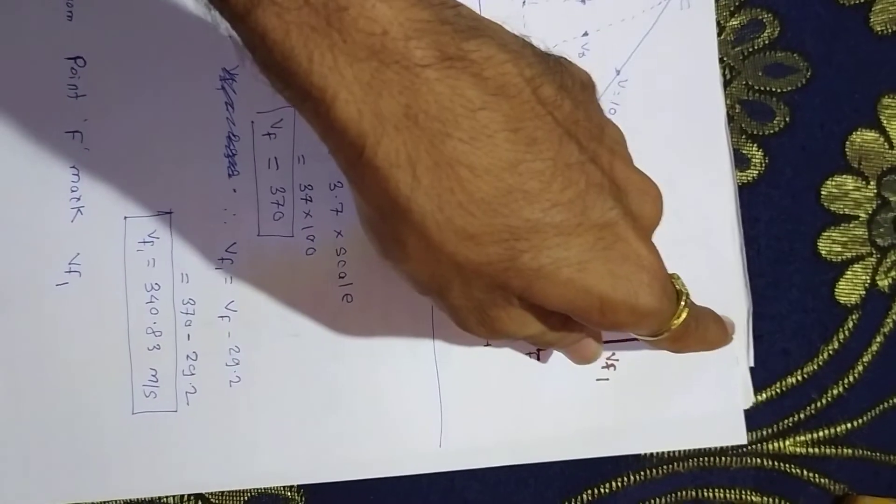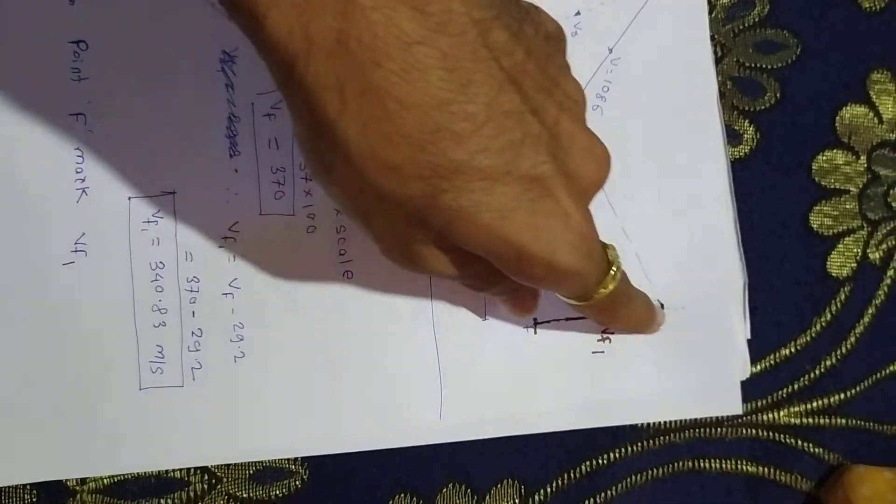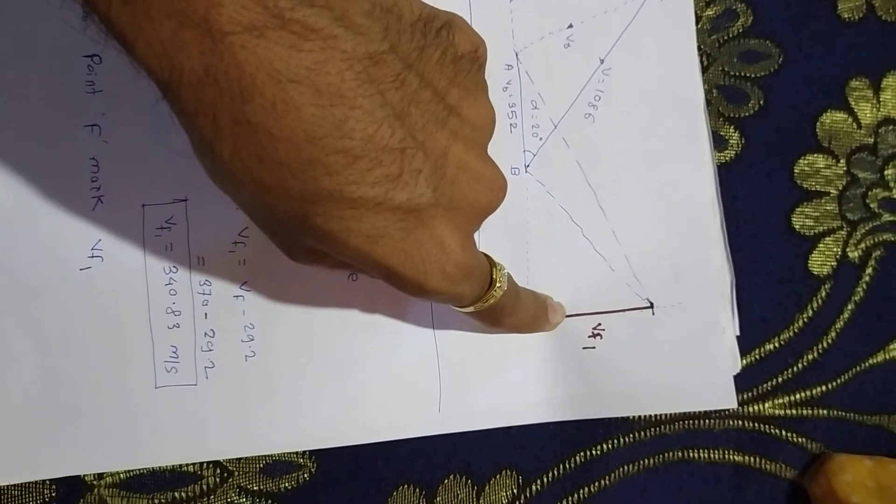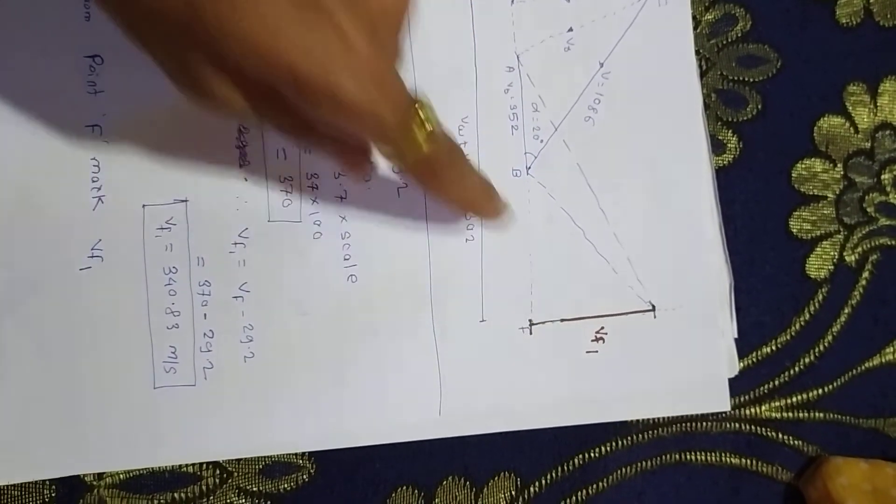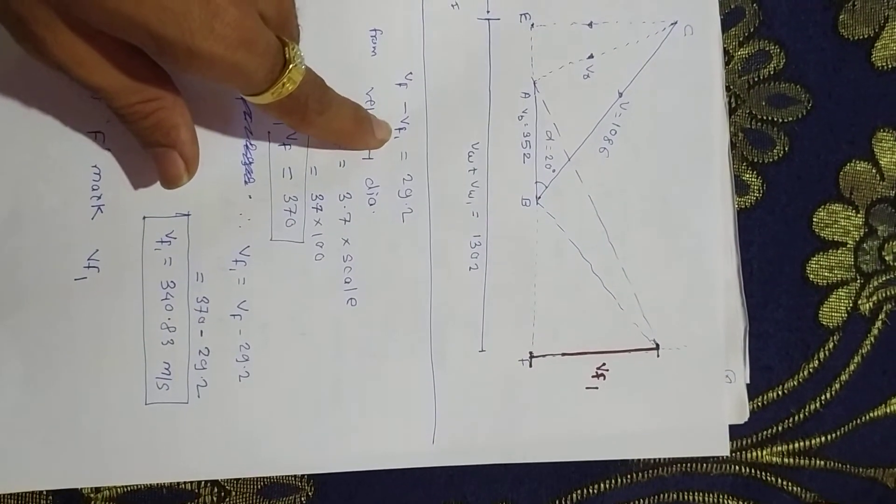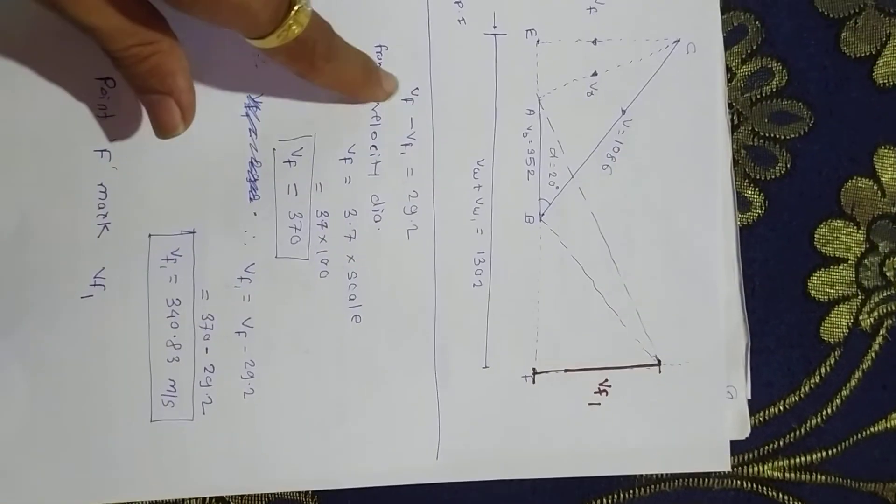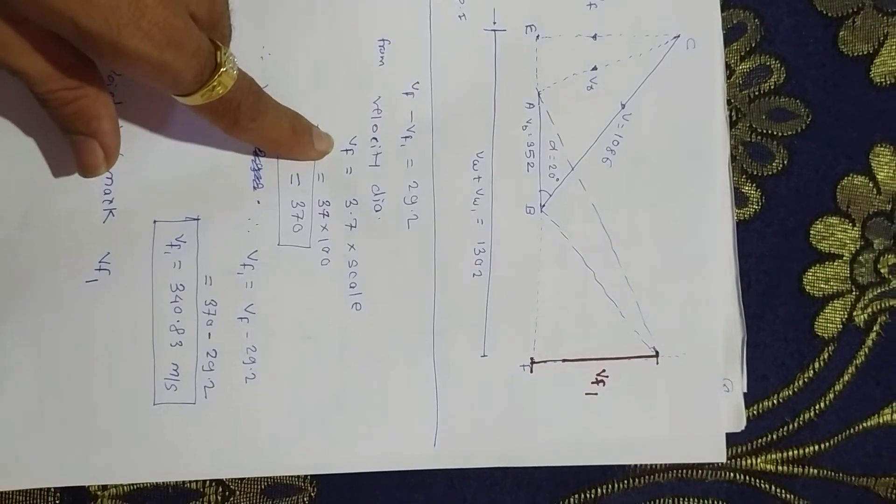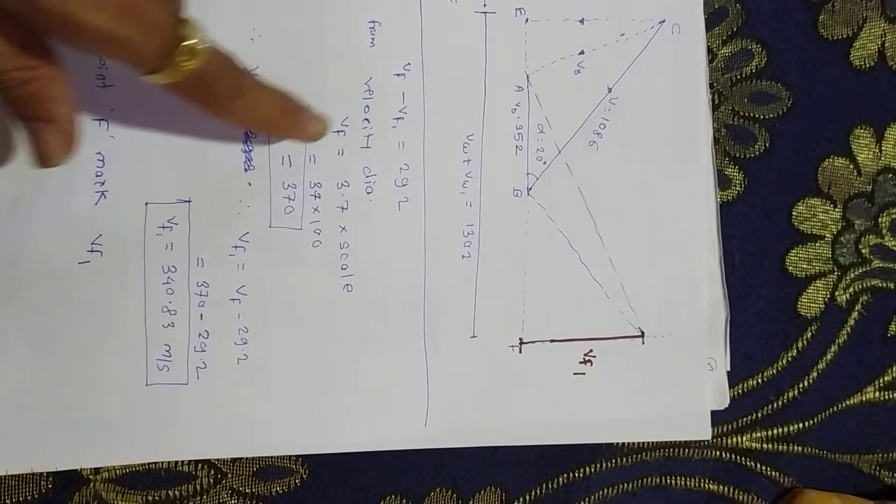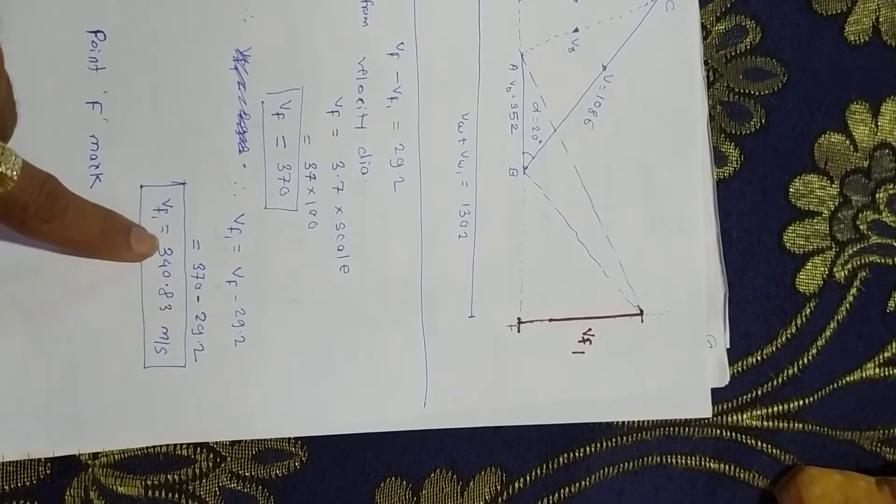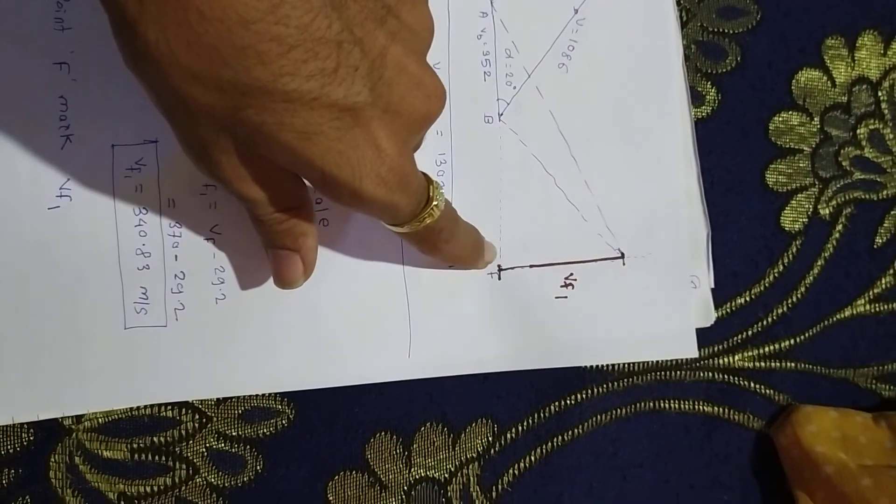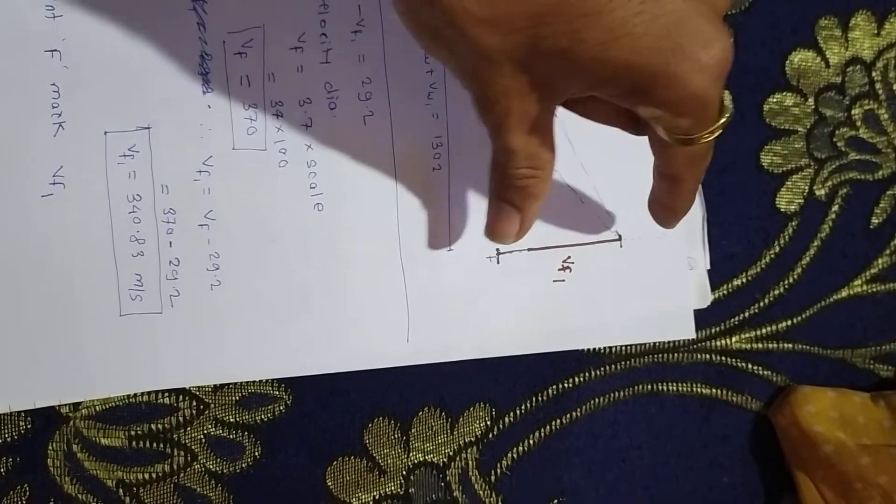Now we know VF1. Initially we calculated and got the relation VF minus VF1 equals 29.2. From the velocity triangle diagram we get the value of VF first, and from VF we calculate using this relation VF1, which is around 340.83. Now make proper distance with scale.